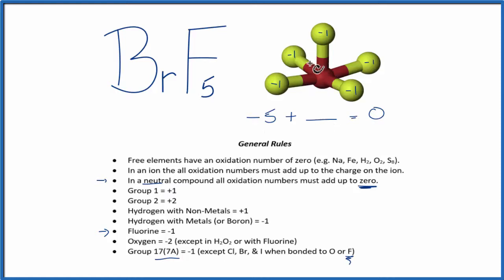That number will be the oxidation number on the bromine. So negative five and a positive five, that equals zero.